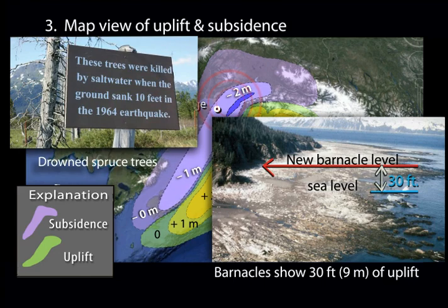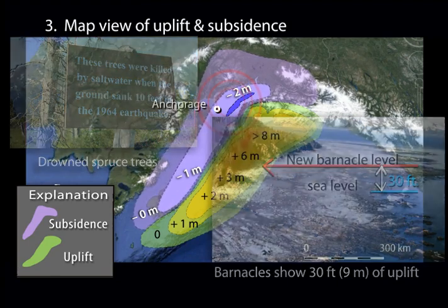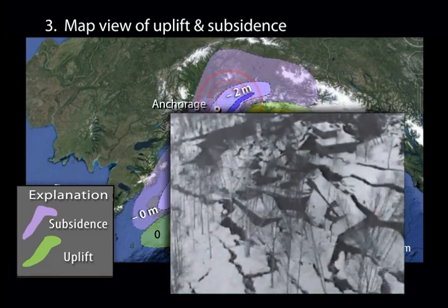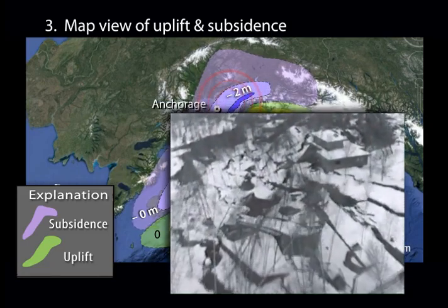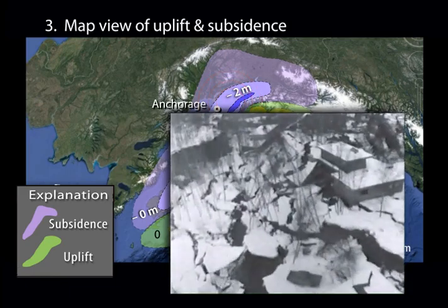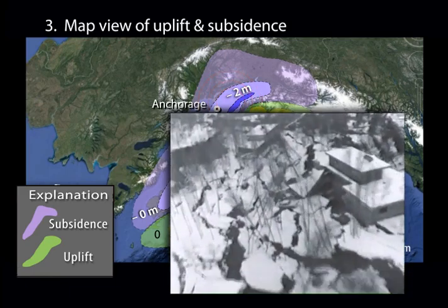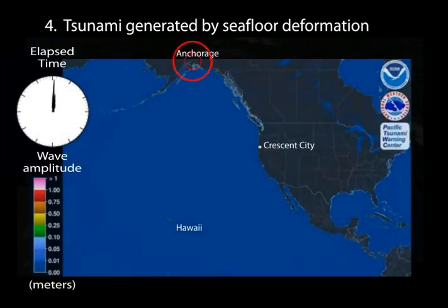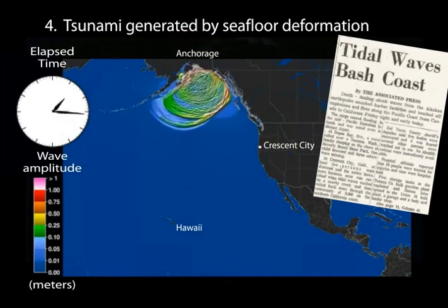The ground shook relentlessly as the rupture progressed along the fault surface. Prolonged shaking served to liquefy underground water-saturated sediment. Liquefaction triggered the landslides that caused major damage in Anchorage. Deformation of the seafloor, especially uplift along the Patton Bay Fault, produced a tsunami that spread across the Pacific Ocean.